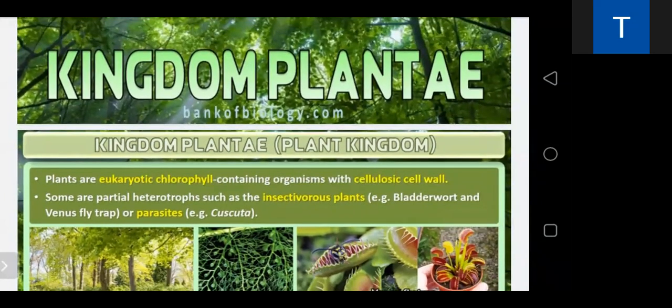Kingdom Plantae is the plant kingdom. This includes all eukaryotes — Protista, Fungi, Plantae, and Animalia are all eukaryotes. Only Monera is for prokaryotes. Kingdom Plantae includes all eukaryotic chlorophyll-containing organisms called plants. They have a cellulosic cell wall. Some members are partially heterotrophic, like insectivorous plants such as Venus flytrap and bladderwort, and Cuscuta is a parasite.